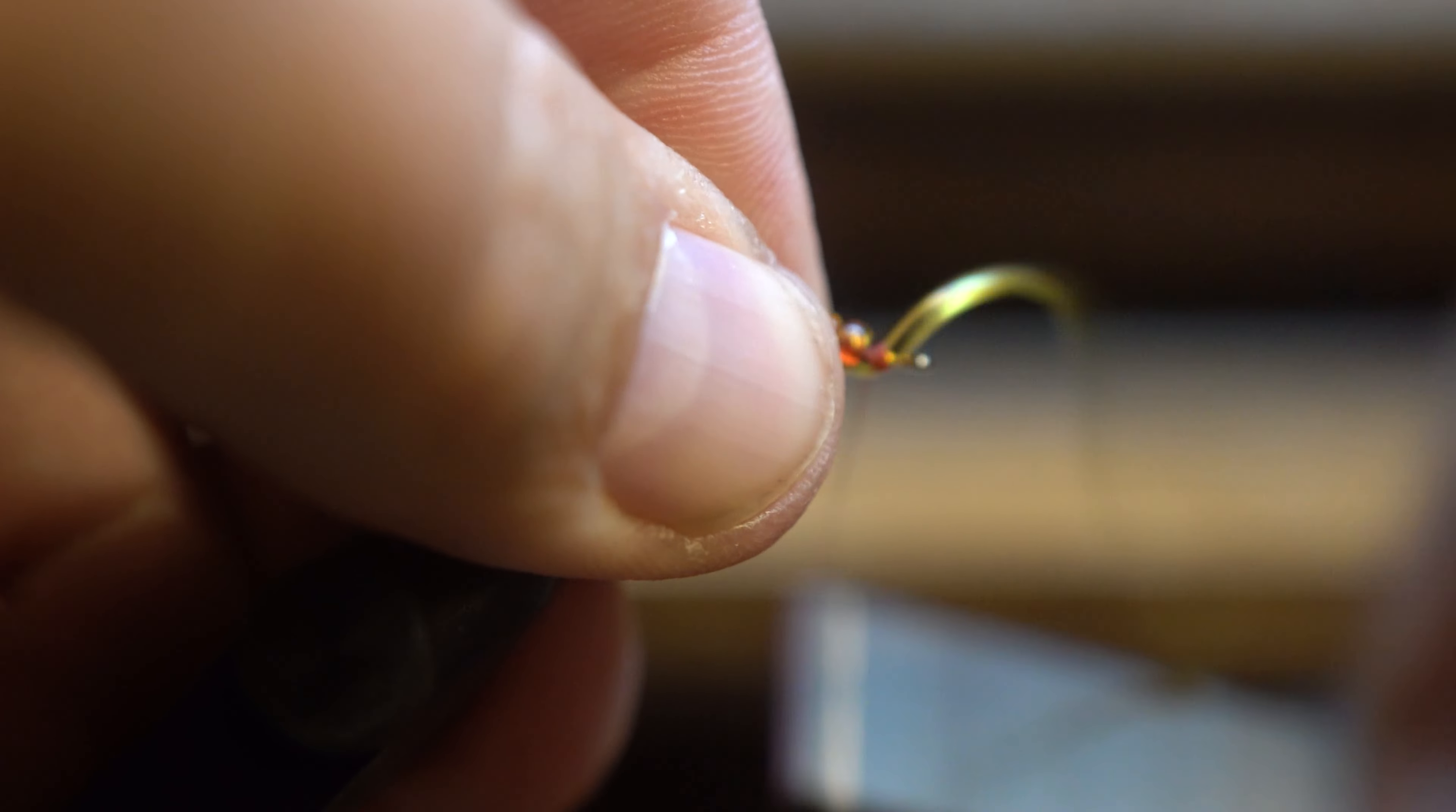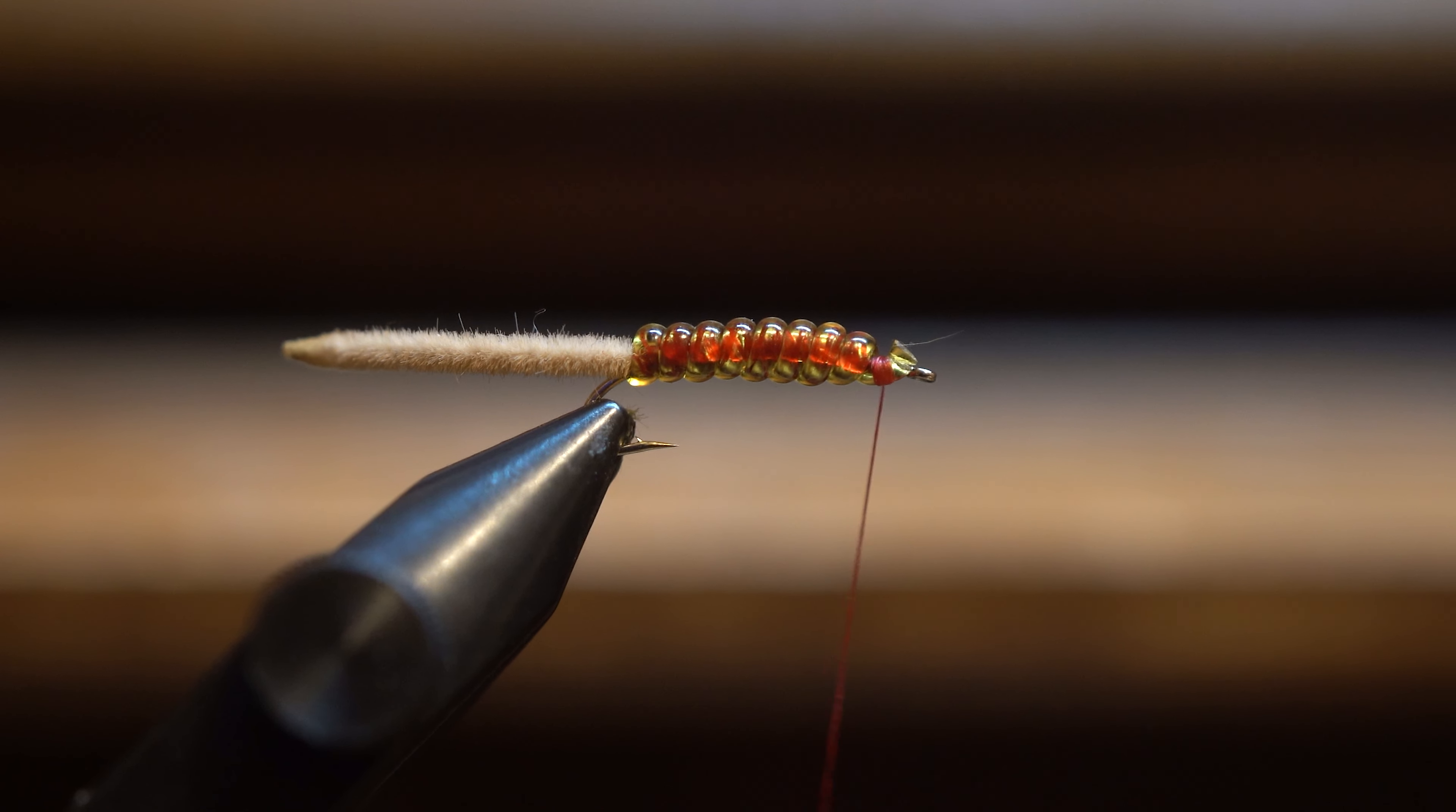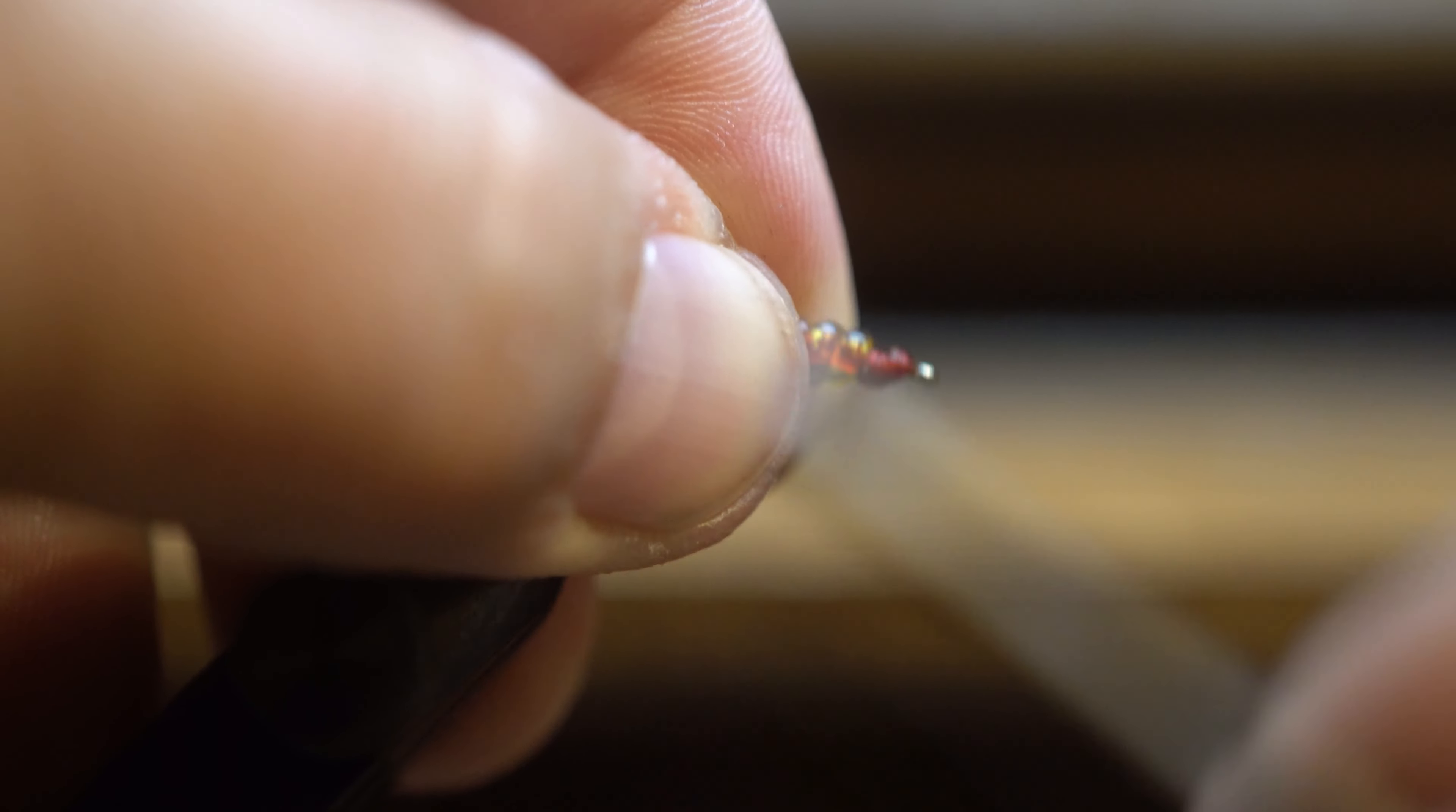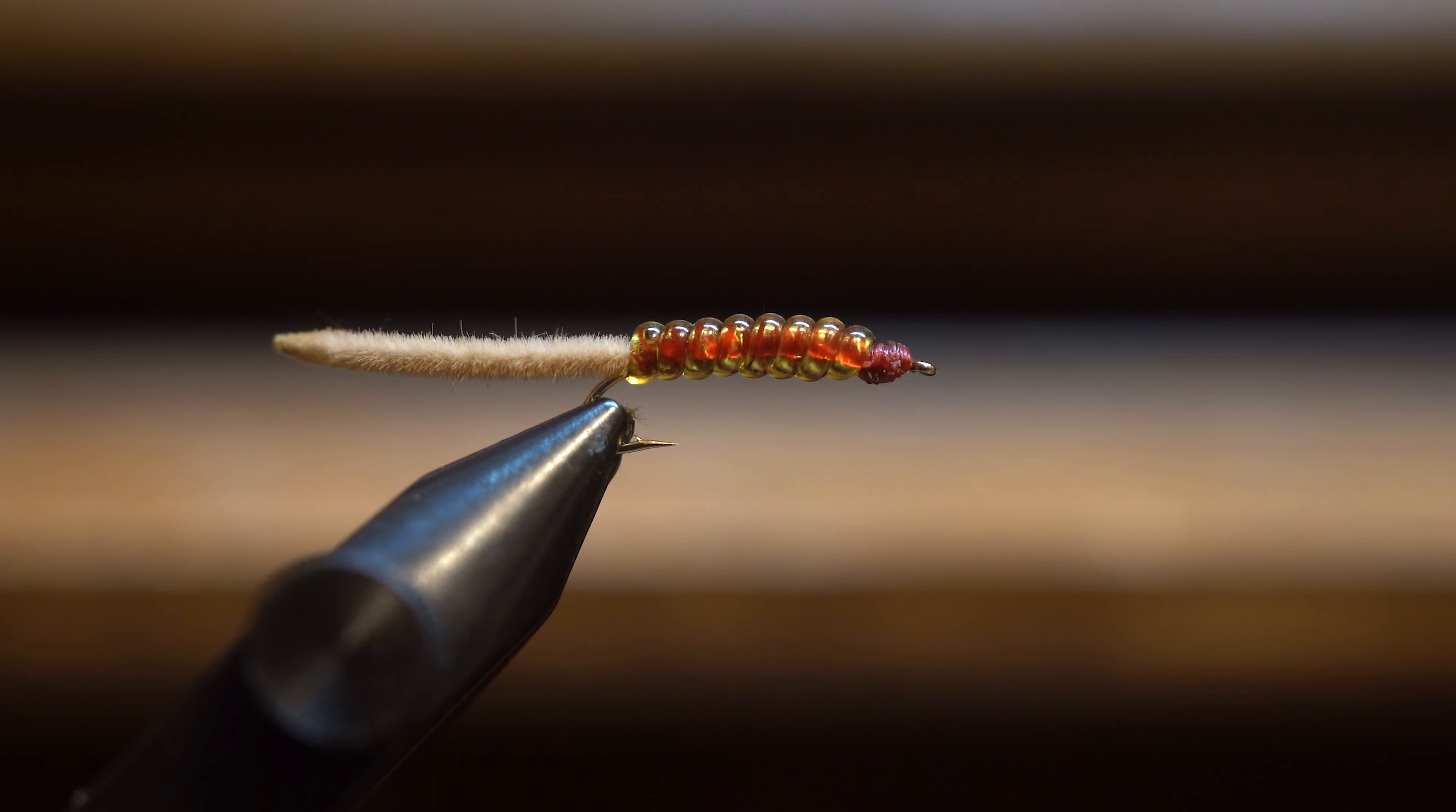So, now I'm going to take my V-Rib, and I'm simply going to just start wrapping it around this hook. And, I'm going to end it right there. Okay, and you can see I've left about an eighth of an inch on the front of this hook. Because, I want the head of this worm to have this nice, blood red color. So, I'm really going to build the head up nice on it. Like so.